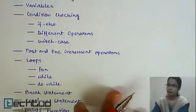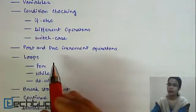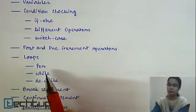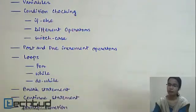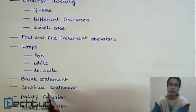After that, we will learn about post and pre-increment as well as decrement operators. Then we'll cover loops. In the loops portion, we have three types of loops: for, while, and do-while. We will learn about them and also their differences.